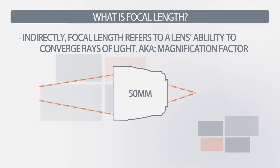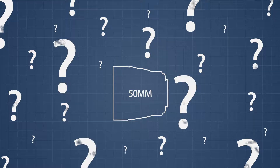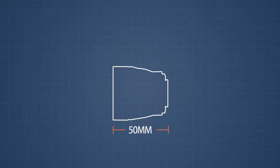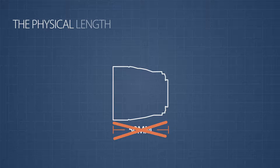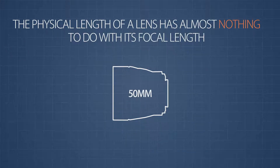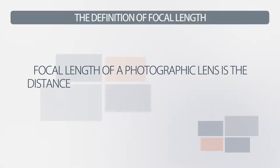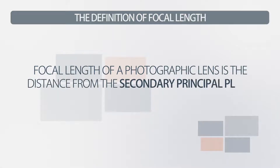We'll come back to the magnification side after we get some of the technical details out of the way. So that 50mm lens — what is that 50mm a measurement of? It isn't the physical length of the lens as many people think. In fact, the physical length of a lens has almost nothing to do with its focal length. Alright, here's your definition: the focal length of a photographic lens is a measurement of the distance from the secondary principal plane to the secondary focal point.